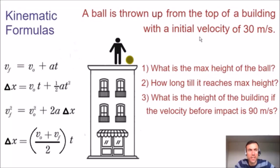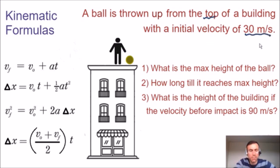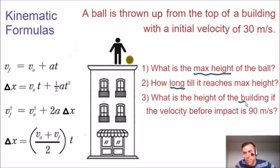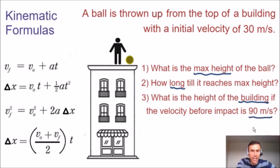Welcome to my second video on kinematics. In this example, a ball is thrown from the top of a building with an initial velocity of 30 meters per second. Given this information, we're going to answer three questions: What is the max height of the ball? How long is it going to take to reach that max height? And what is the height of the building, given that the velocity of the ball before impact is 90 meters per second?